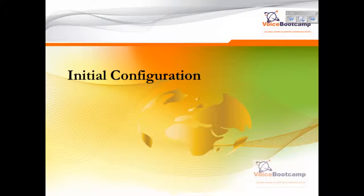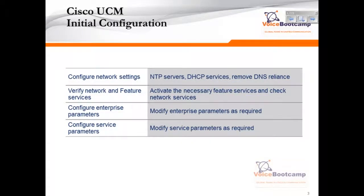When the IP phone is registered, it will pull down configurations from the TFTP server that requires certain settings in order for proper communication to work. The initial configuration involves changing the NTP server, DHCP service — whether you want to assign the call manager as a DHCP server — whether to use DNS name resolution from the IP phone perspective, activating services, changing the enterprise parameters, and changing service parameters when required.